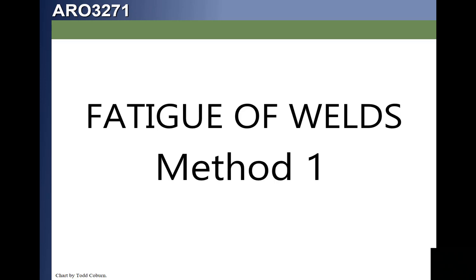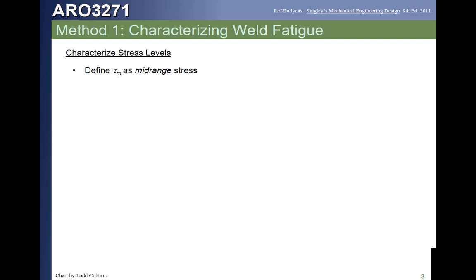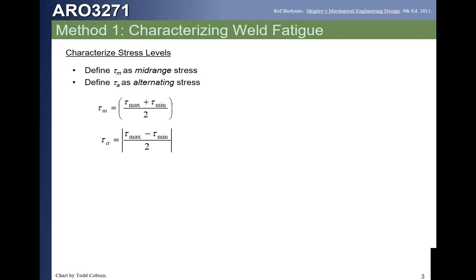Method 1 follows what we learned initially about fatigue. To utilize the tools we've already learned, we start by characterizing our stresses — figuring out the maximum and minimum loads and calculating the maximum and minimum shear stresses in the weld. These could also be normal stresses, but since most of our welds will be fillet welds, we're going to treat them as shear stresses. For butt welds, the same approach applies for normal stresses.